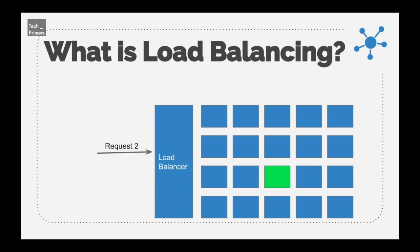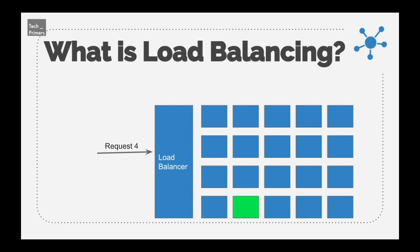Request 1 goes to a particular server, request 2 goes to a different server, request 3 to another, and request 4 to yet another. All these requests could be from different users or from the same user. These are different strategies a company can apply in load balancing. So what are the usages of load balancers and what does a load balancer provide?